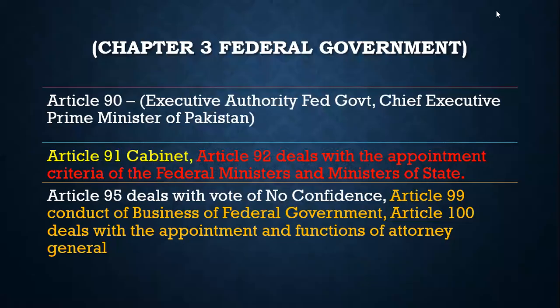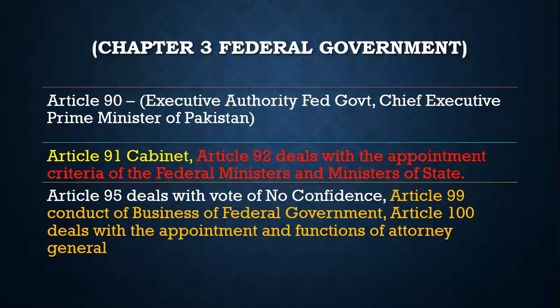We start up. Article 95 deals with the vote of no confidence procedure. Basically Chapter 3 of the constitution, Part 3, discusses this. Article 95 deals with the vote of no confidence procedure: what is the vote of no confidence procedure? If twenty percent of the members sign that resolution before the prime minister, it becomes possible.